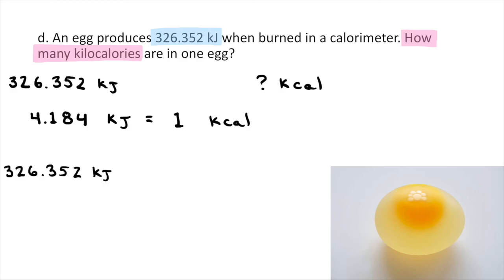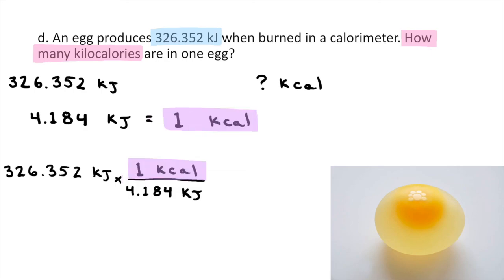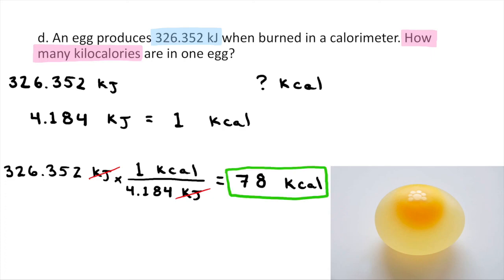Once you've got your conversion factor, take the number they give you — 326.352 kilojoules — write a multiplication sign and a fraction bar, and put the units you start with on the bottom because you want them to cancel. So kilojoules go on the bottom; fill the fraction in with the conversion factor: next to kilojoules goes 4.184, going over the fraction bar is like crossing the equal sign, and on top put one kilocalorie. Kilojoules cancel and you're left with kilocalories. On a calculator: 326.352 times one, enter, divided by 4.184, enter — you should get 78 kilocalories. That's your answer. Thank you for your attention.